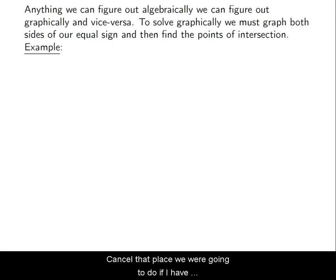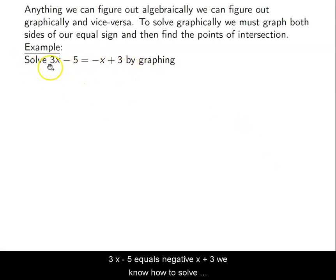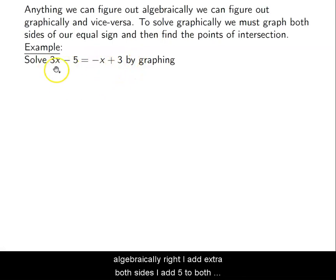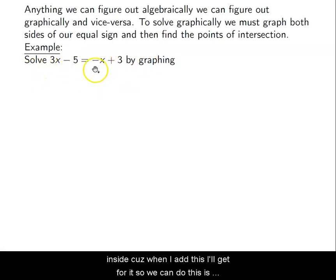So if I have 3x - 5 = -x + 3, we know how to solve this algebraically. I add x to both sides, I add 5 to both sides, and then I divide both sides by 4. So we can do this through algebra — this is very easy to solve algebraically.